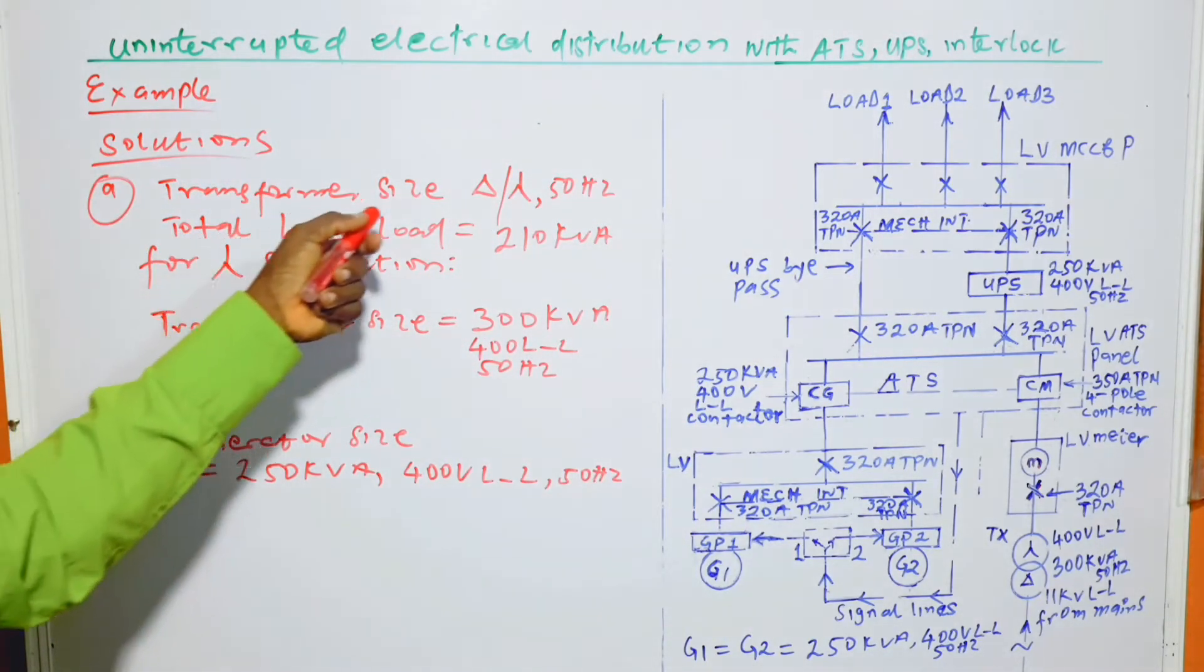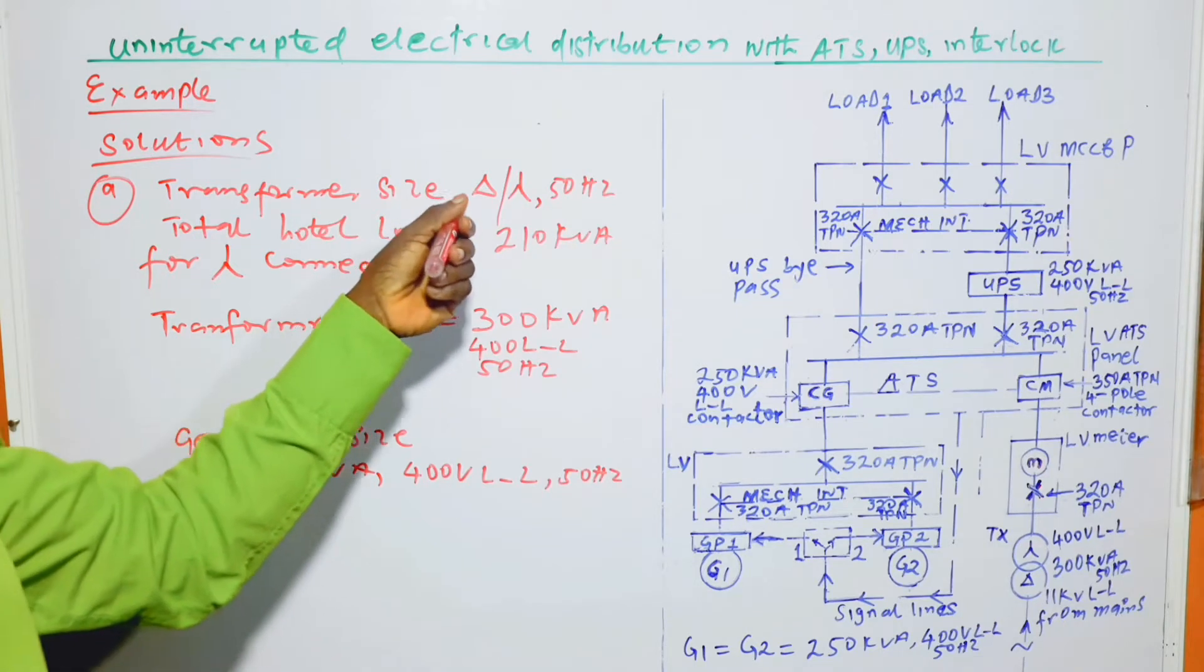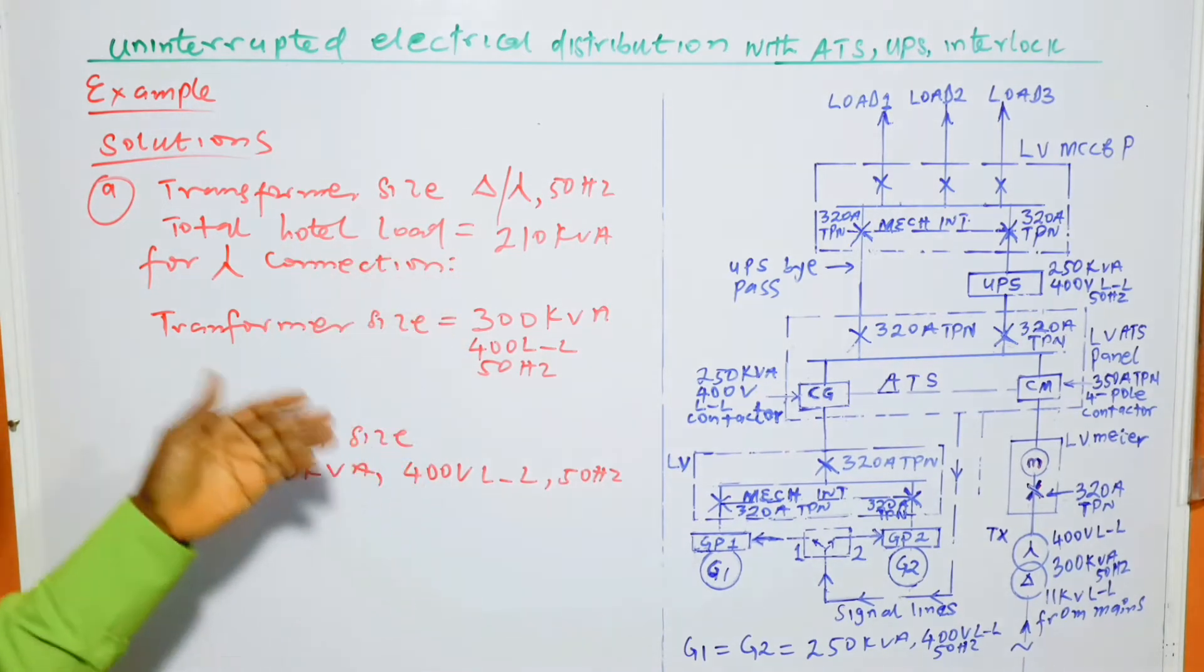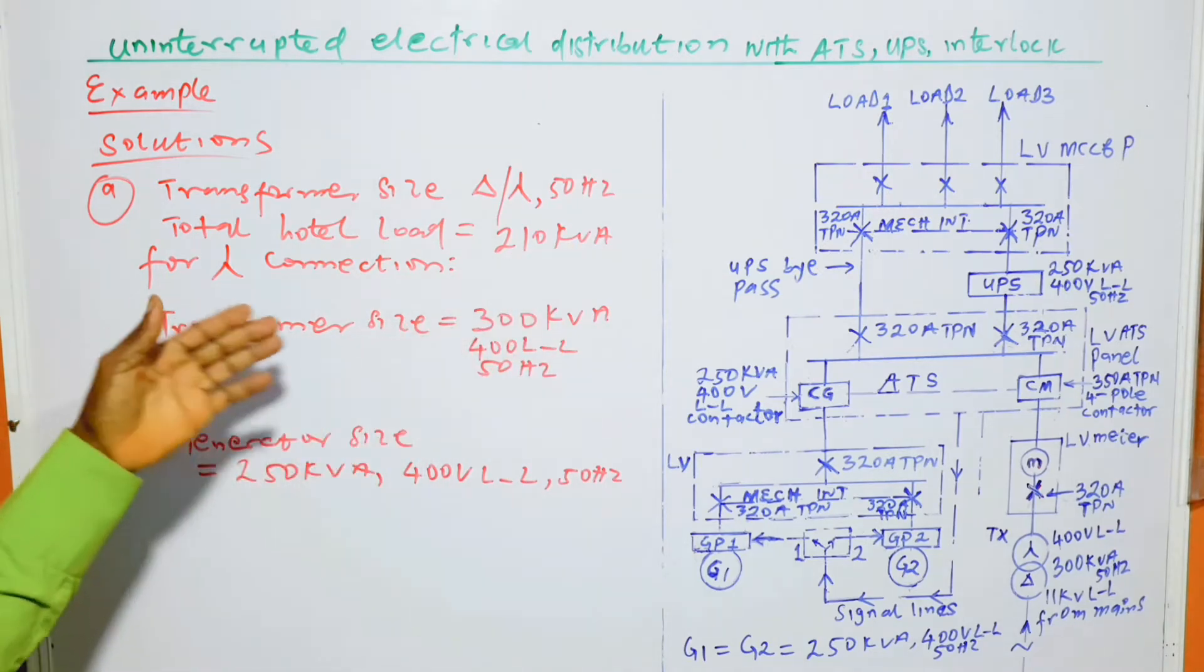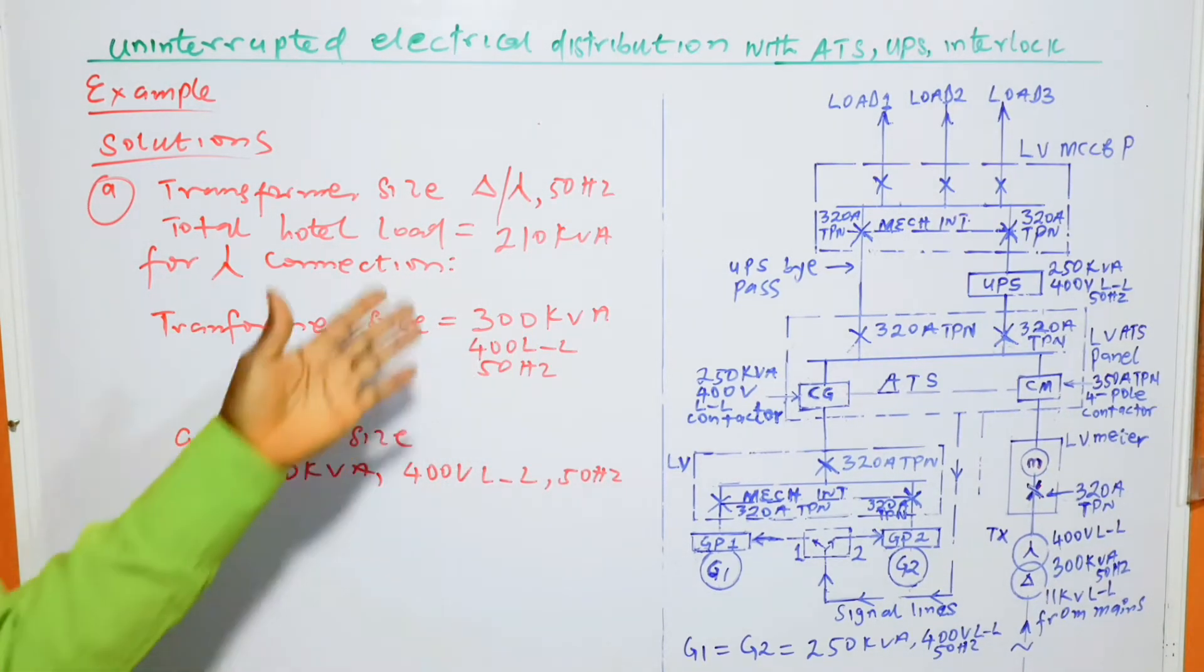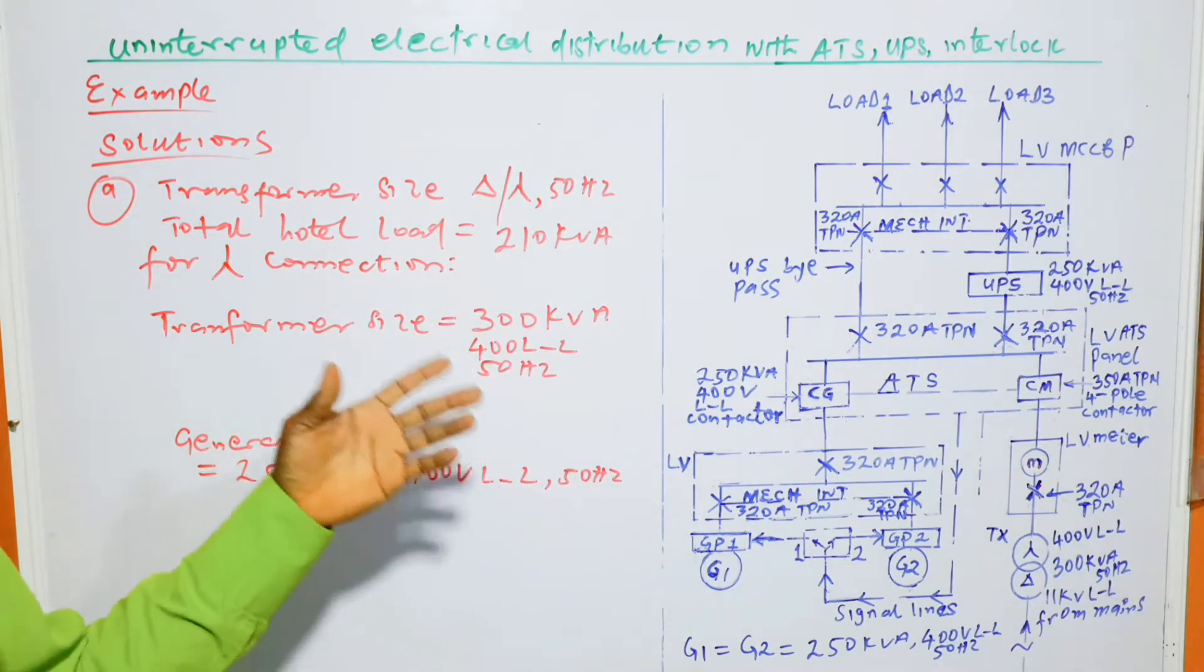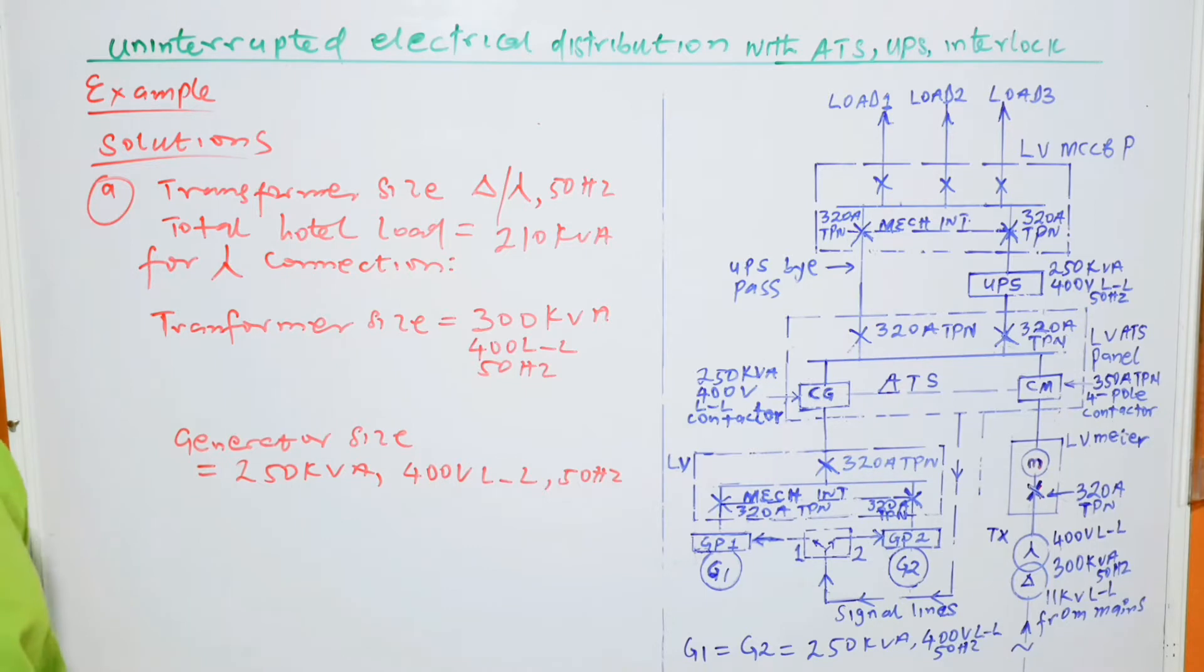Solving the problems. In part A, the transformer size, as given by the question, the transformer is delta star at 50Hz frequency. So the total hotel load is 210kVA. So the transformer size is 300kVA. 300kVA is higher than 210kVA and it also takes care of the future incremental load.